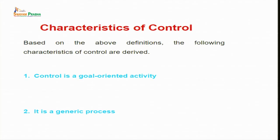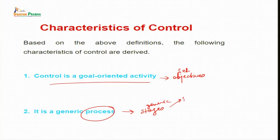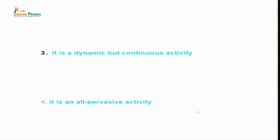What are the characteristics of the control process? The first characteristic is that it is a goal-oriented activity, because we have some set objectives that have to be met. It is a generic process because it has generic stages: you set the standard first, then execute the work, then measure the performance, and then see the deviations. Thus it is called a generic process.